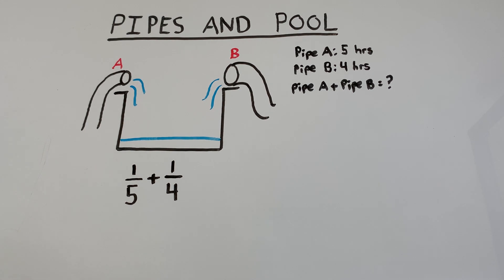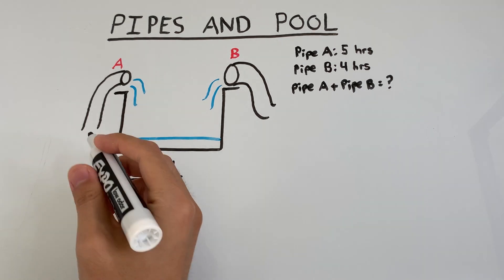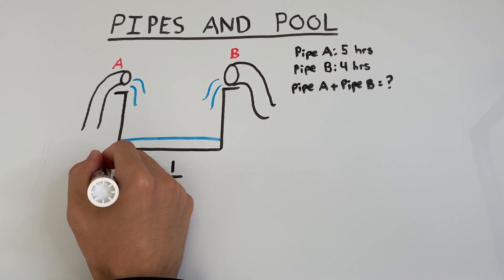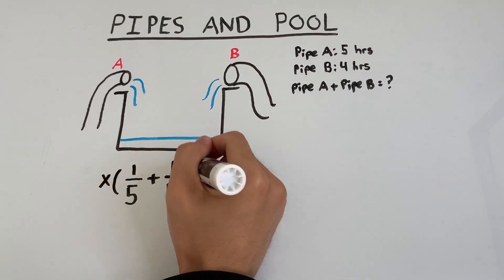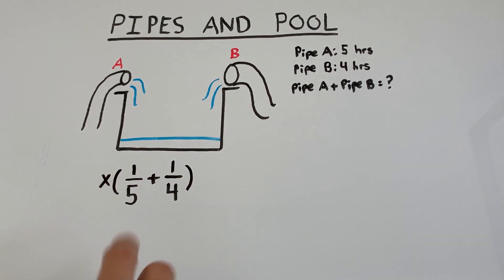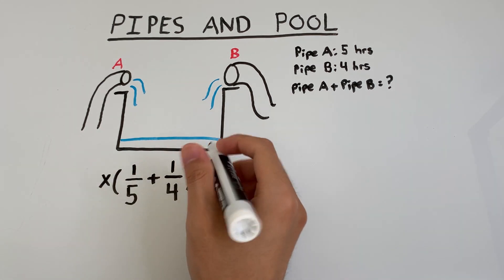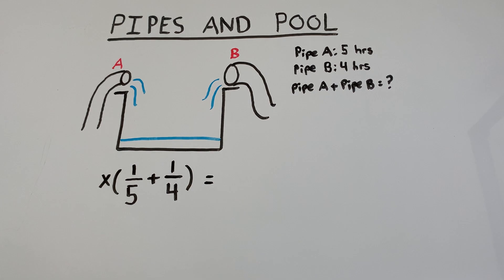So in two hours they would fill two times this. In three hours they would fill up three times this. So if we now let X be the total amount of time that it takes for the two pipes to fill the pool, we see that in X hours, X times this expression will tell us how much of the pool is filled up.